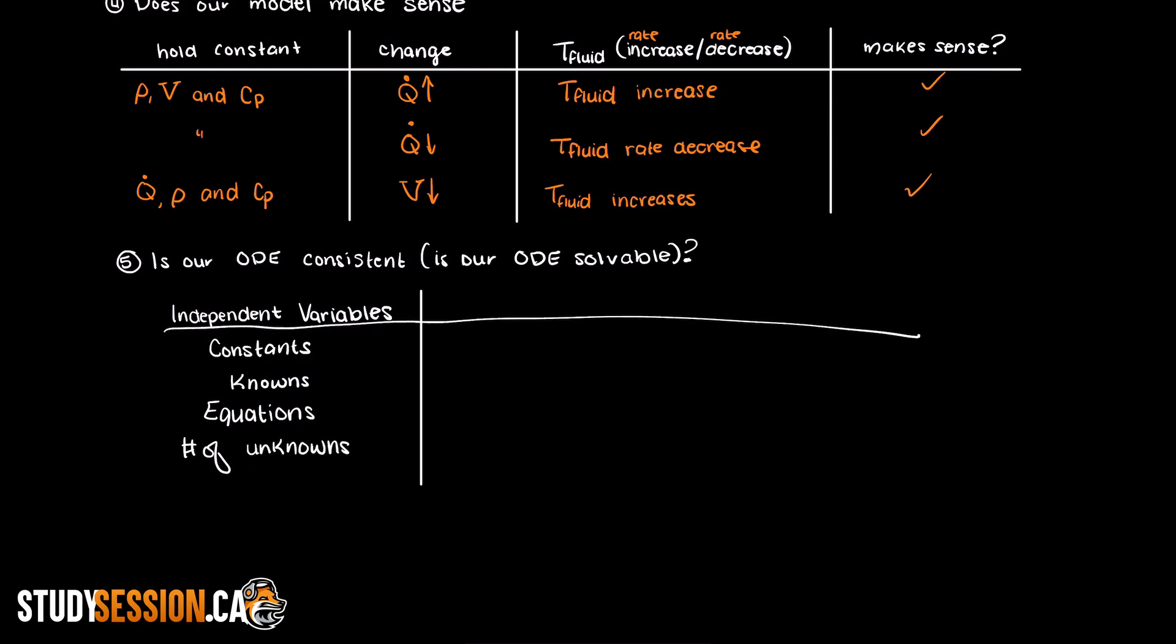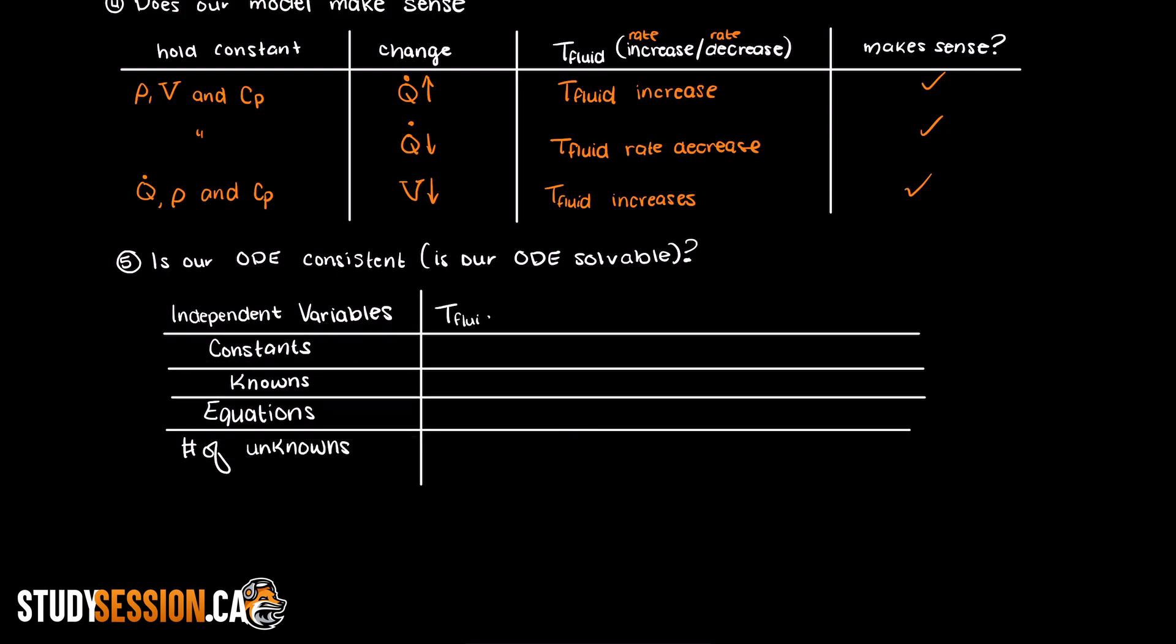So we have heat generation, density, volume of the fluid, specific heat, and the fluid temperature. We'll use this top region here as a checklist to ensure that all of our independent variables are properly accounted for.